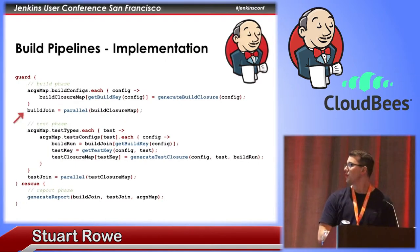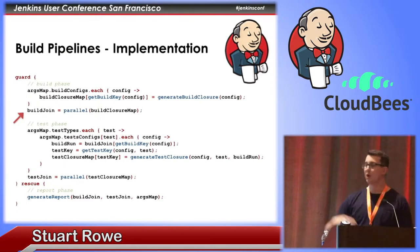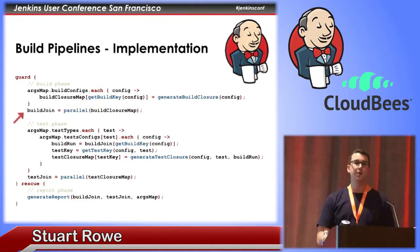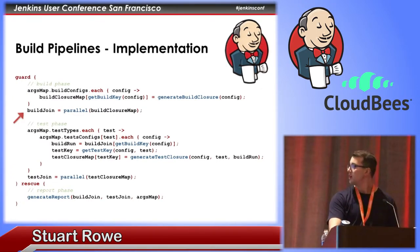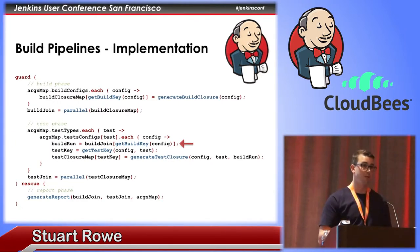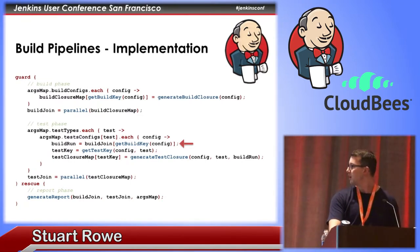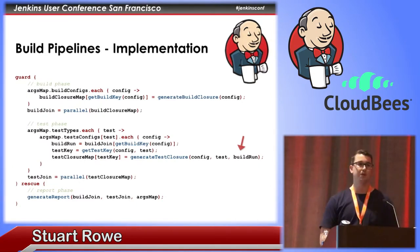When parallel execution completes, it returns a map object — which I call a join, because it's waiting on all closures to complete. That map has the exact same key set as the build closure map passed into parallel, and the values are a collection of flow run objects which encapsulate the actual jobs that ran. Similarly, for our test phase, we iterate over a set of tests. For each test type there is a particular config or set of configs to run. We use the same build key helper method to look up the build from the build join map, and pass that into our helper method for generating a test closure so we can look up the build number to facilitate artifact copying.